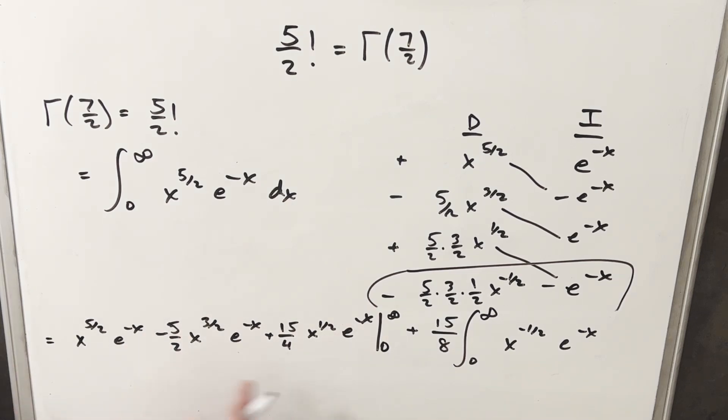Now when we plug in zero here, e to the zero is going to be one. So we're just evaluating at all these x terms, but all these x terms when we plug in zero are going to be zero. So the fortunate thing is this whole thing is going to zero. So now all we need to do is just deal with this piece, and we're done.